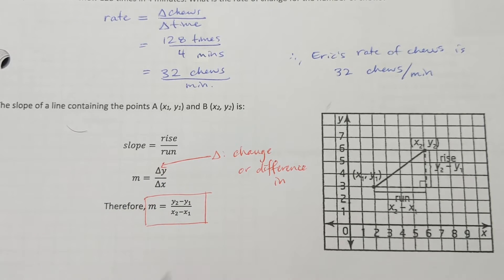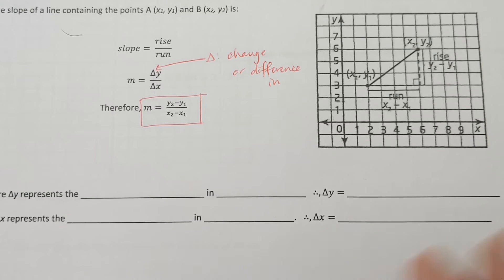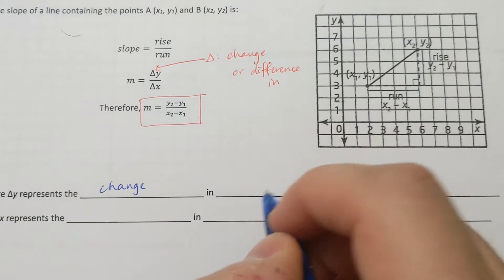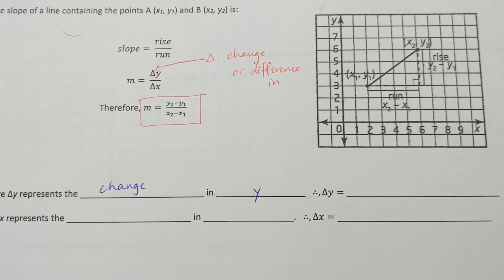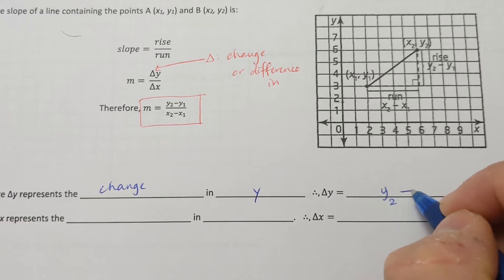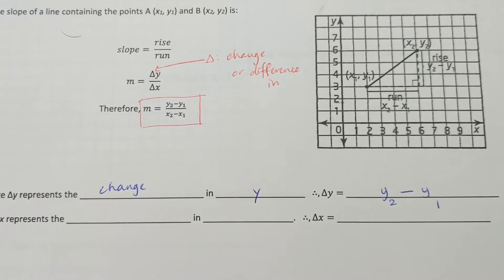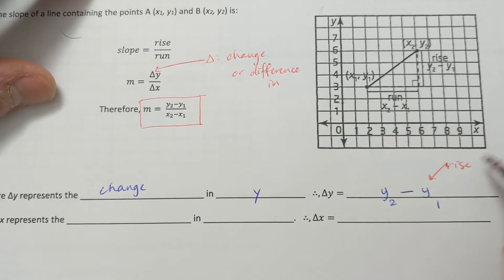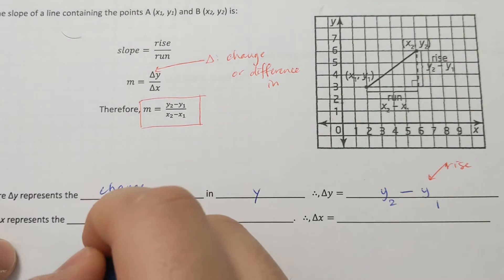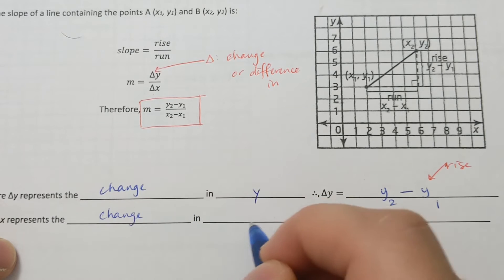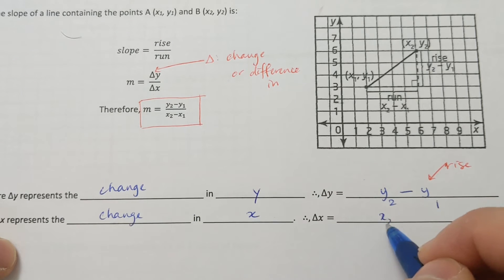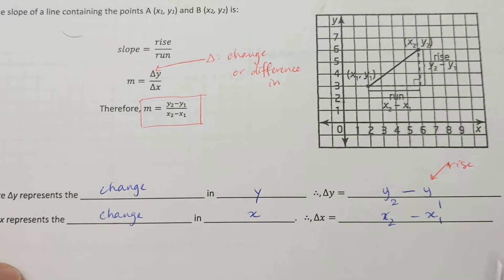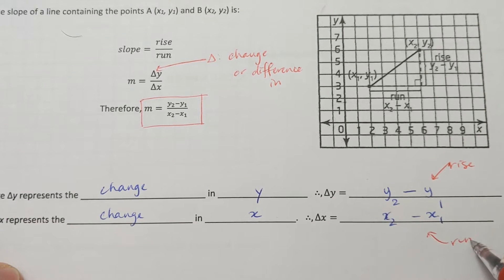Delta y represents the change in y, which is y2 minus y1 — that is your rise. Over the change in x, x2 minus x1 — that is your run.